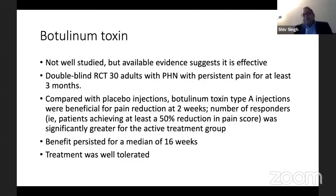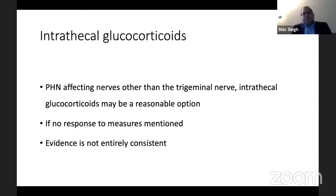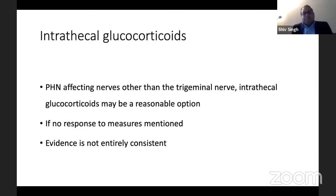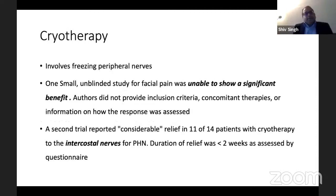People have tried intrathecal glucocorticoids, since post-herpetic neuralgia can affect the trigeminal nerve where you can't apply many topical treatments. However, the evidence of pain relief was not consistent with intrathecal glucocorticoids and it cannot be recommended. Cryotherapy — where you freeze the peripheral nerve — was studied in one small unblinded study for facial pain and was unable to show significant benefit, while another trial of 14 patients showed that 11 out of 14 demonstrated good pain relief at two weeks using a questionnaire.